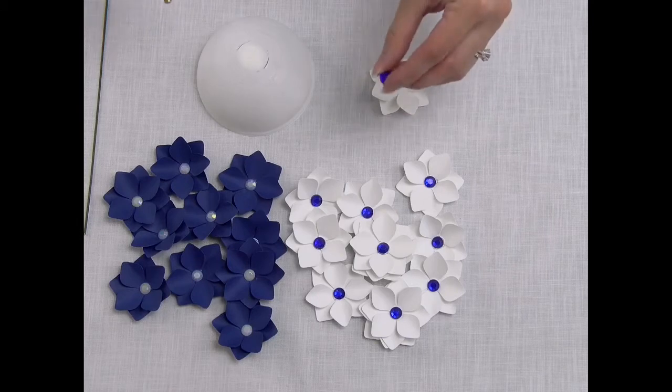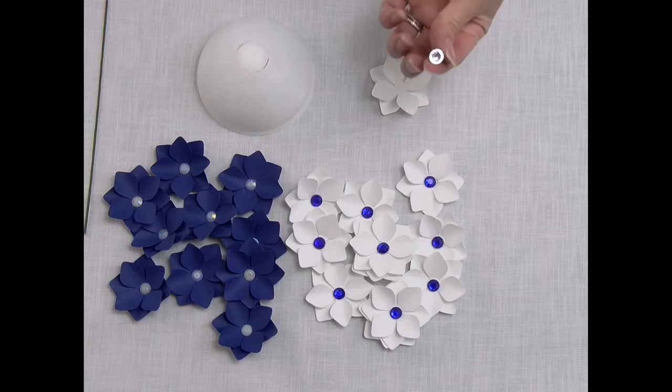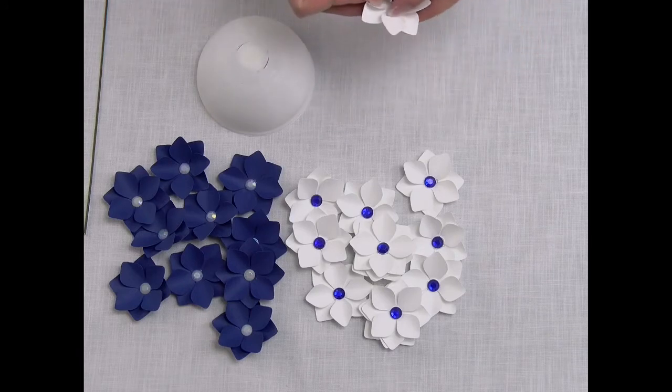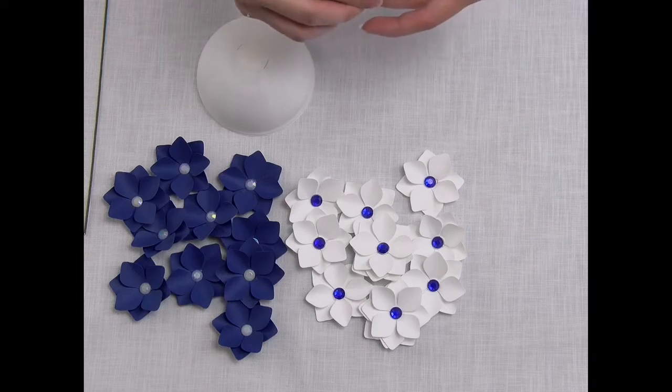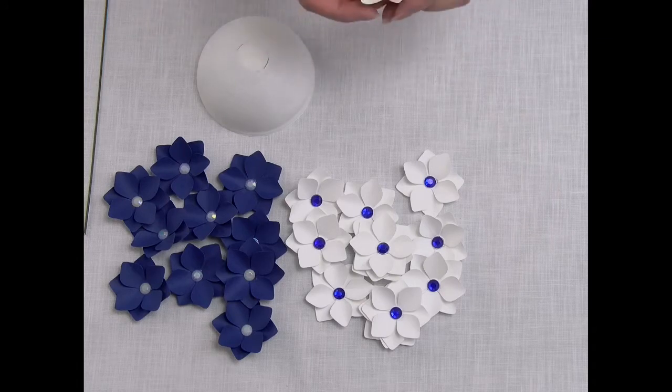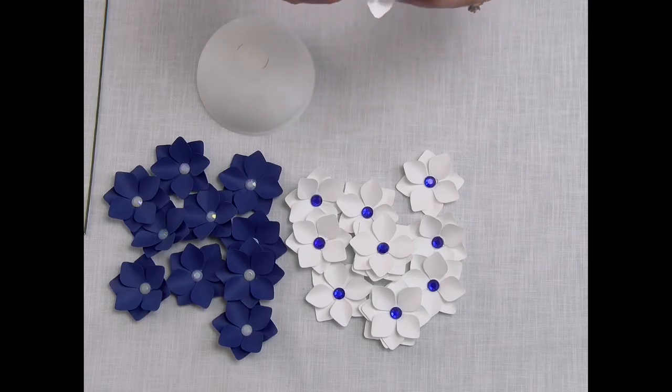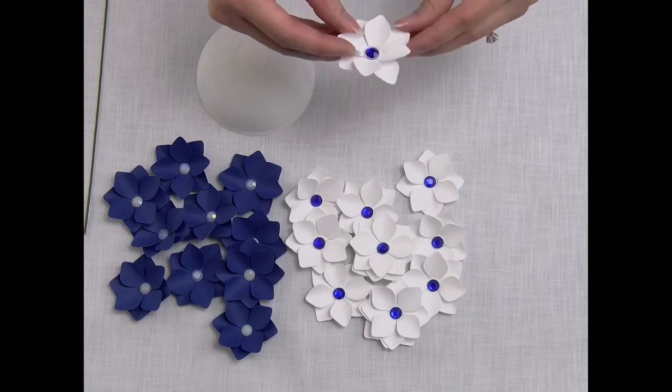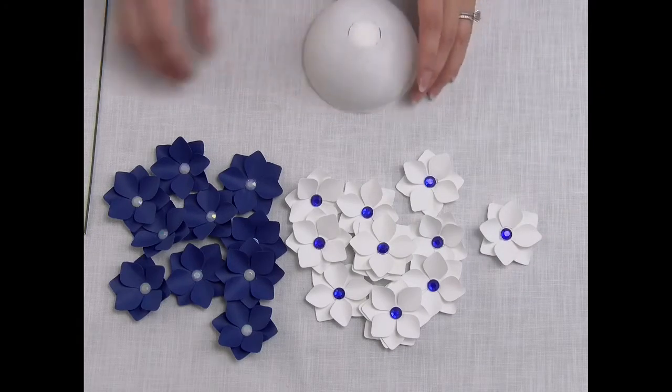Then I'm going to use an acrylic gem on this dark blue color. Place glue in the middle and place it down the center here. And now you have your flower that looks like this.